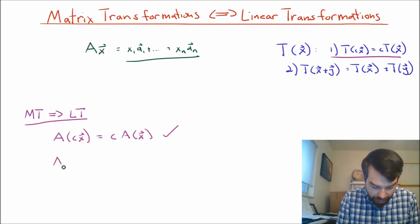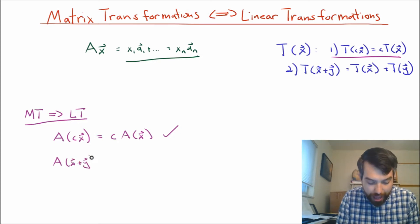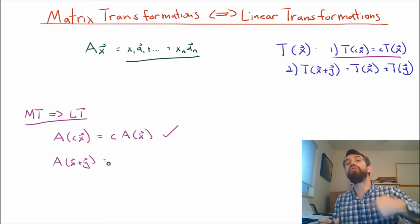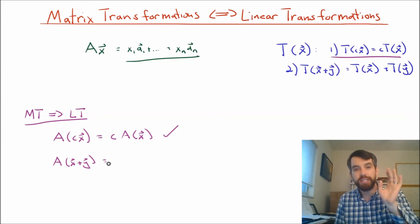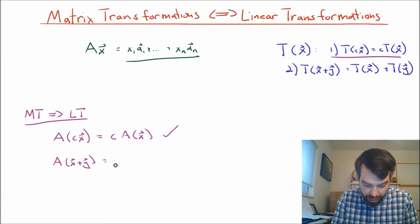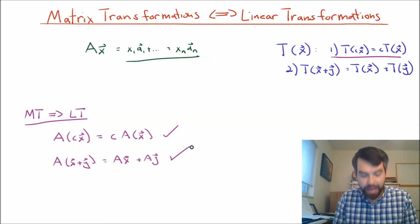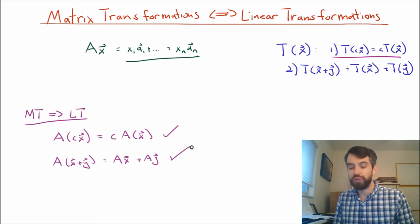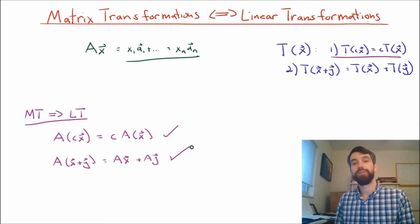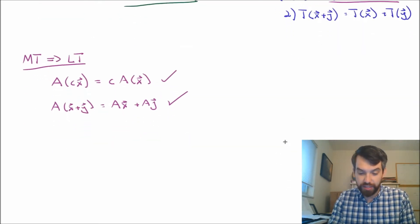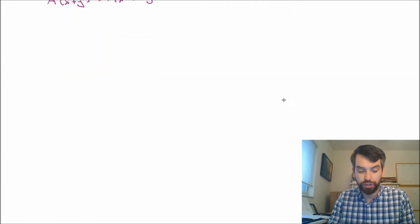Likewise, if I want to take A of x plus y, well, we also had the fact that matrix vector multiplication, it distributed over a vector addition. That was another one of our established algebraic properties. So, this is just going to be equal to Ax plus Ay by that algebraic property. And in other words, the algebraic properties we've proved just immediately give us that it's a linear transformation.